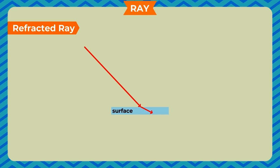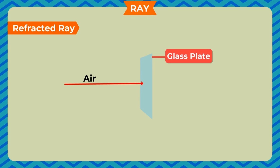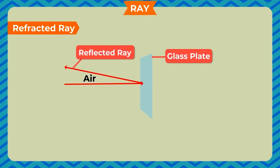Refracted ray. When light propagates from one medium to another, the ray either bends or goes away from its original path. The ray that represents the travelling of light in another medium is called the refracted ray. For example, when light travels from air to a glass plate: a ray of light incident on the glass surface is the incident ray; some part of it reflects from the glass surface back to air, known as the reflected ray; and some part enters through the glass plate, known as the refracted ray.